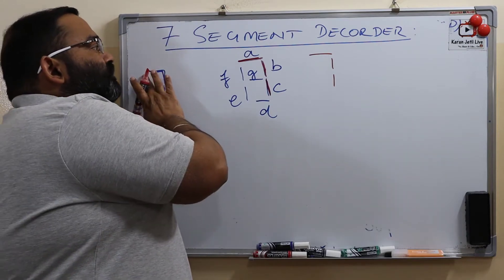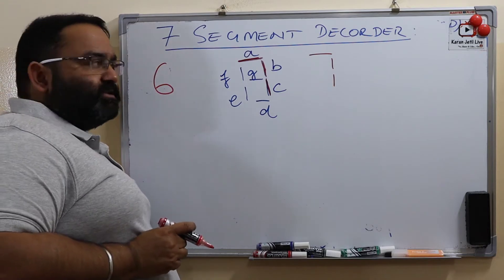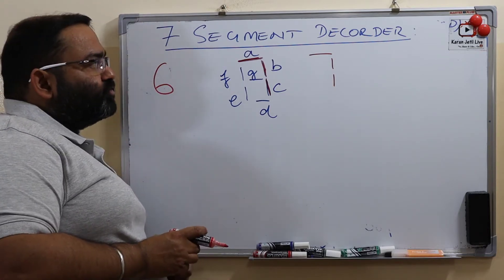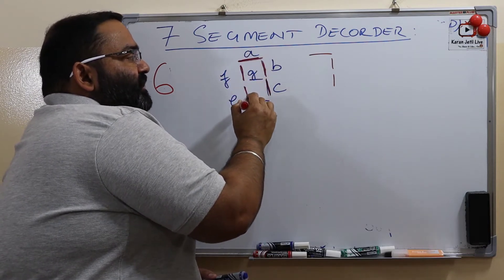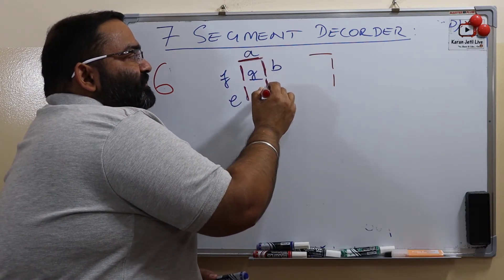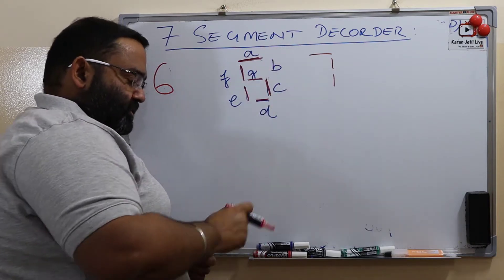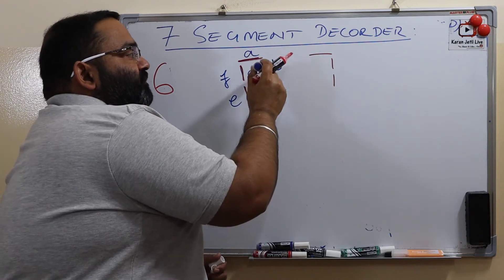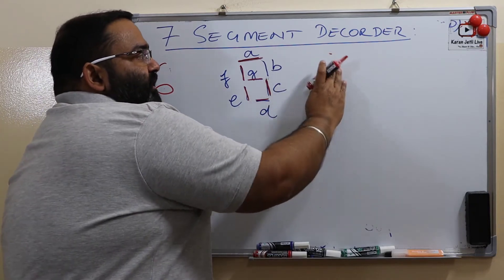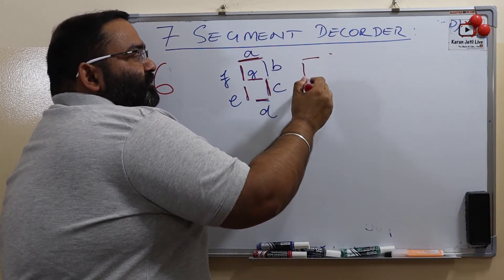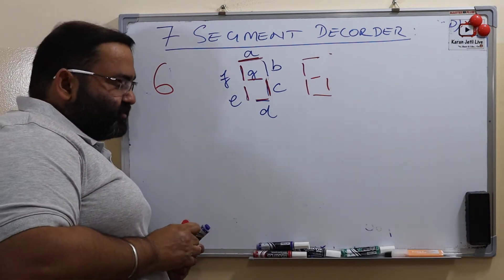Now suppose we want to display decimal number 6. To display 6, which segments do we want to switch on? We need A on, E on, D on, C on, and G on. So B will be turned off. Here, red color indicates on. So what we display here using 7 segments is decimal number 6.